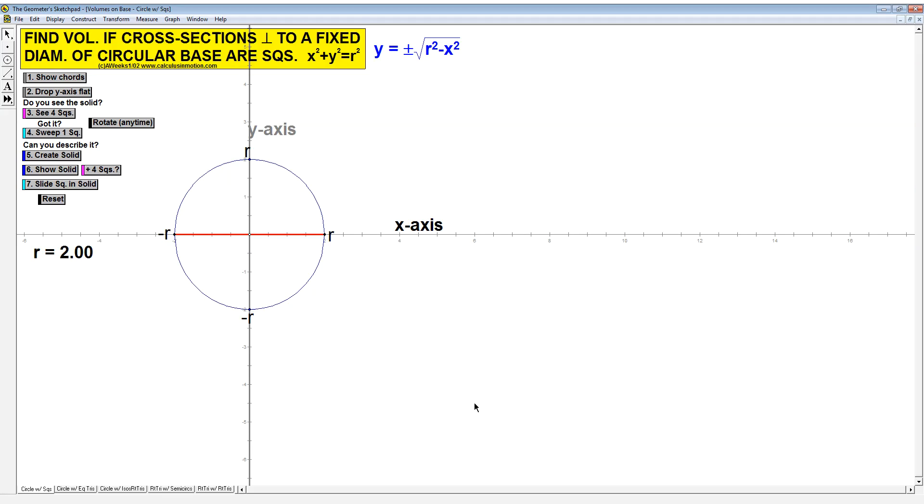The idea with volume with cross sections perpendicular to a fixed base deals with our graphs being the floor of our building. In this case, we're dealing with a circle. It's actually two graphs: y equals the square root of r squared minus x squared, and then the opposite of the square root of r squared minus x squared.